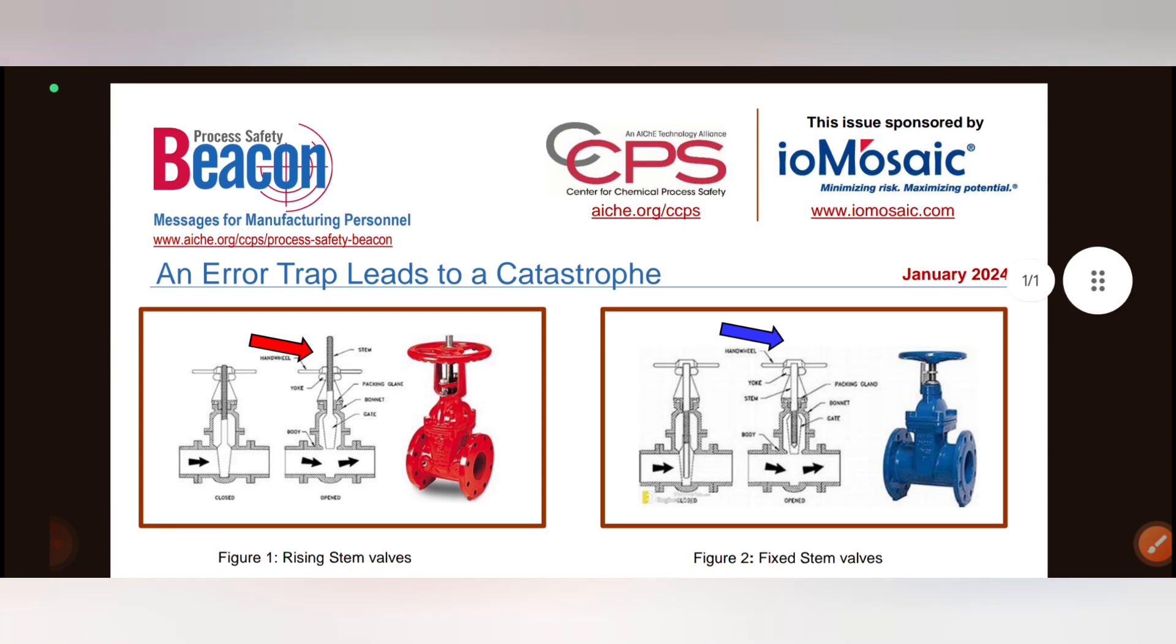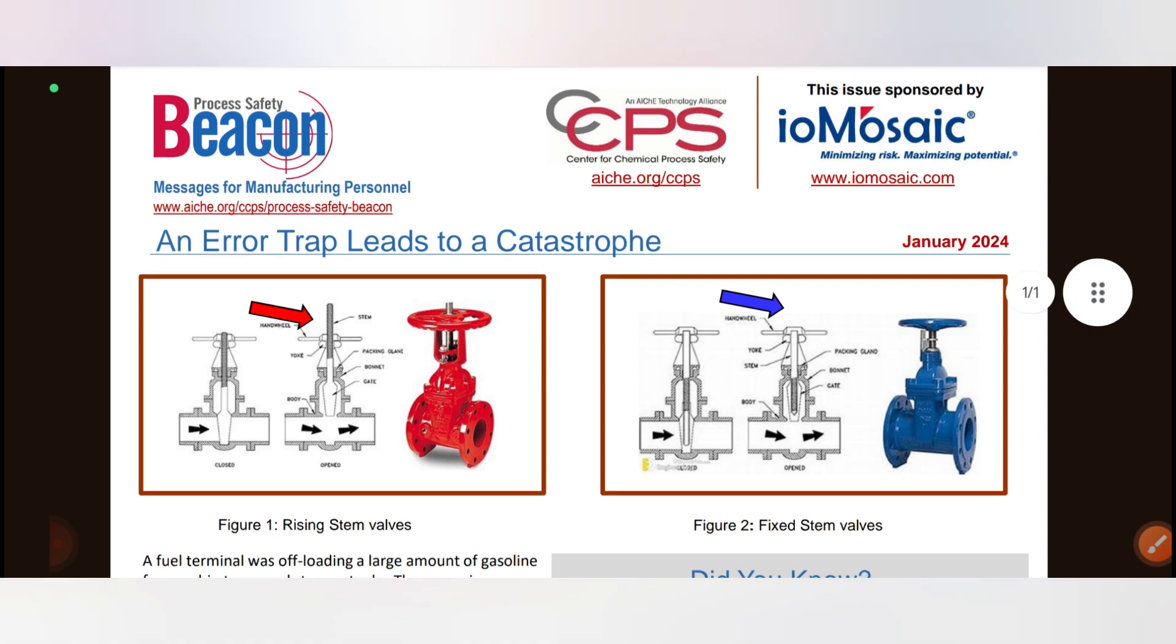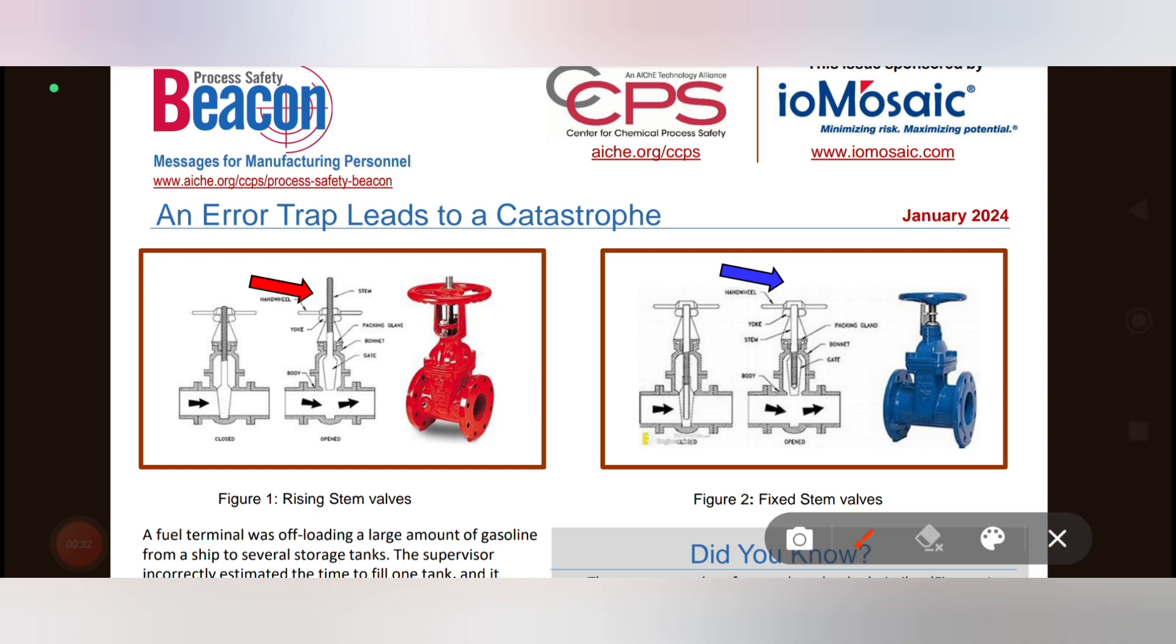Error Trap means that the functionality is different. I am going to explain with an example. Here are two valves. These valves are two different types. You see the red valve. This is rising stem gate valve.